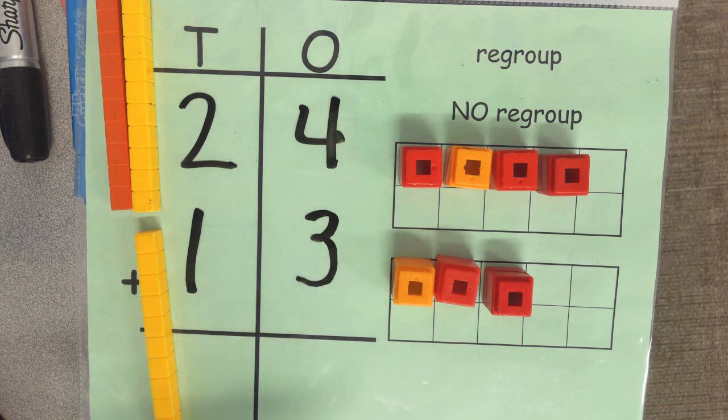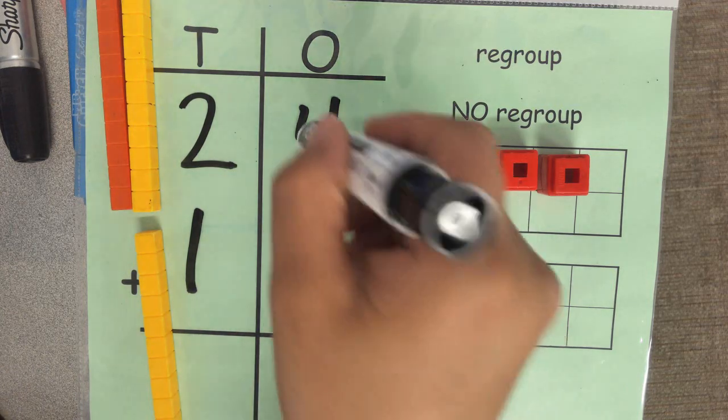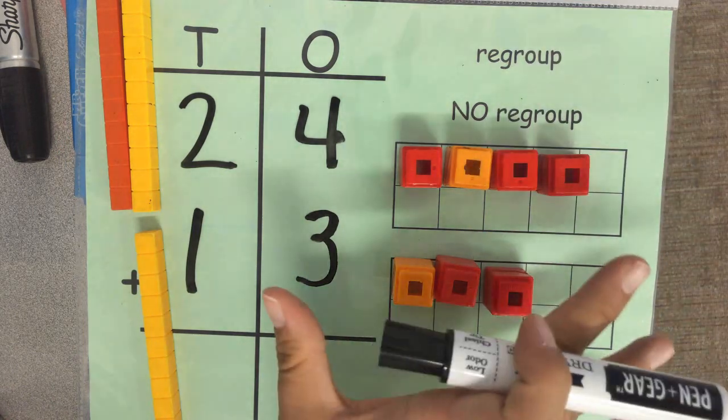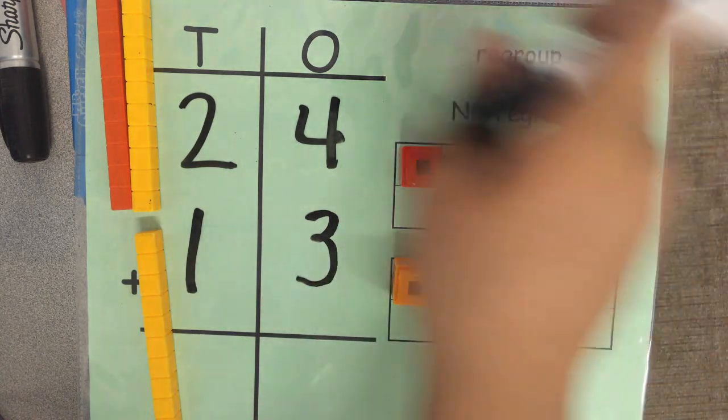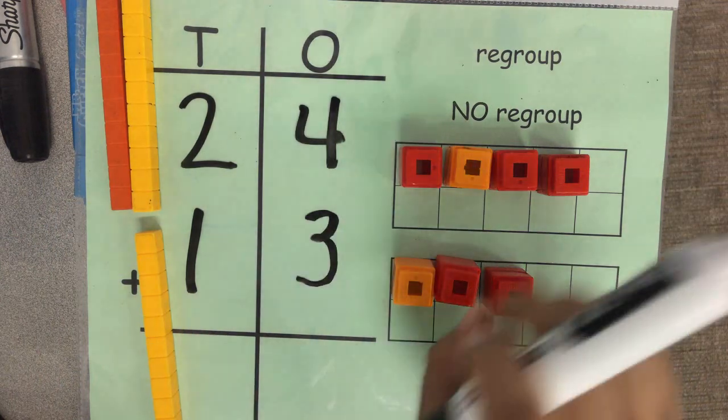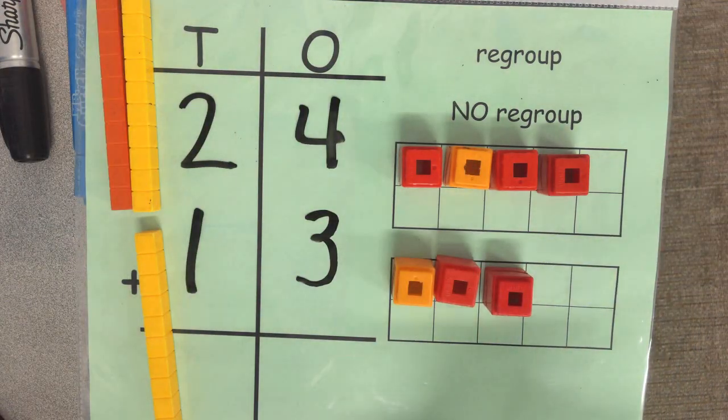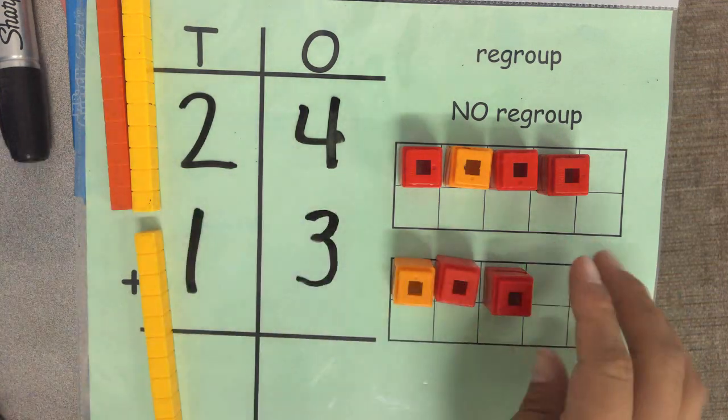Now you're ready to add. Well, we have 4 plus 3. We should put this together and see if it makes 10 or more. You have to regroup. That means you bring your group of 10 over to the tens place. If it's less than that, then you don't regroup.